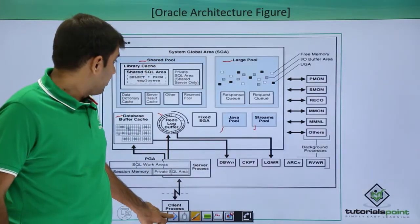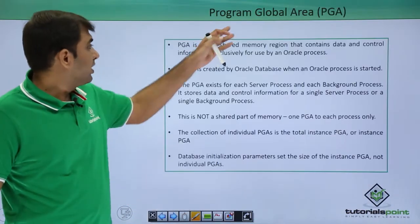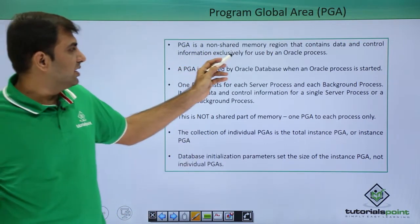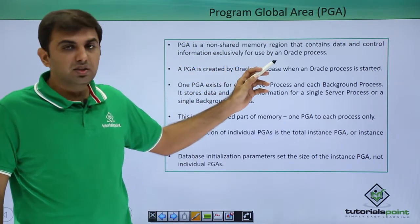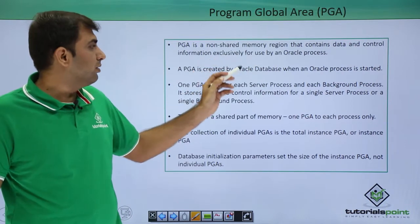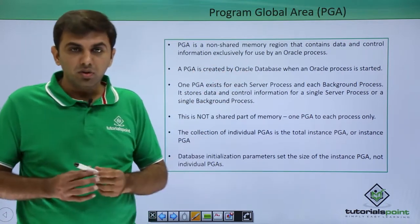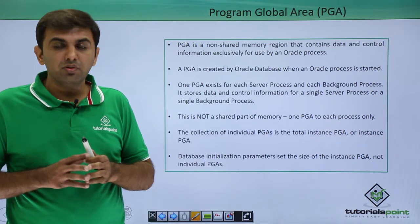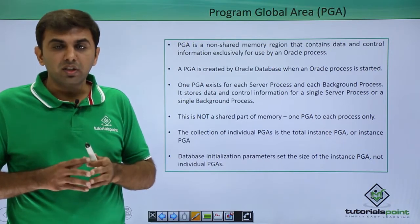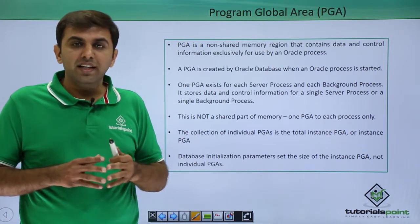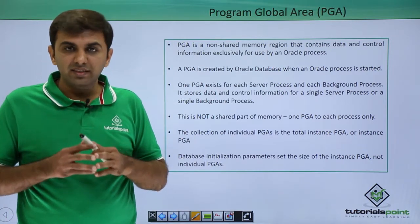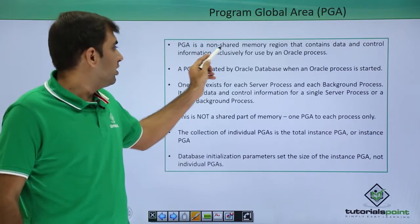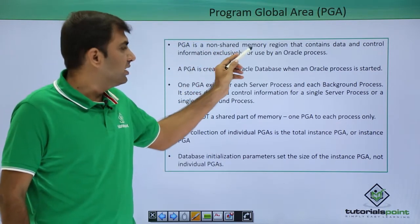Next, we are going to see what is PGA — Program Global Area. PGA is a non-shareable memory region that contains data and control information exclusively for use by an Oracle process. This is exclusively for the users and not a shareable object. While SGA is a totally shareable object, PGA is a non-shareable memory region.